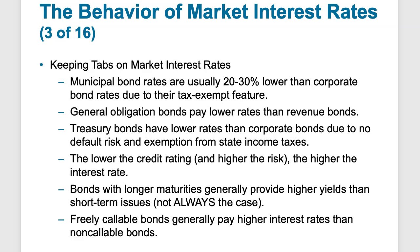Municipal bond rates are usually 20% to 30% lower than corporate bond rates, mostly due to their tax-exempt status. Municipals are generally exempt from federal, state, and local taxes, making them more desirable and allowing them to offer bonds at lower interest rates and still be competitive because of this often double or triple tax-free advantage. General obligation bonds pay lower rates than revenue bonds because they're backed by the full power of the issuing government body.